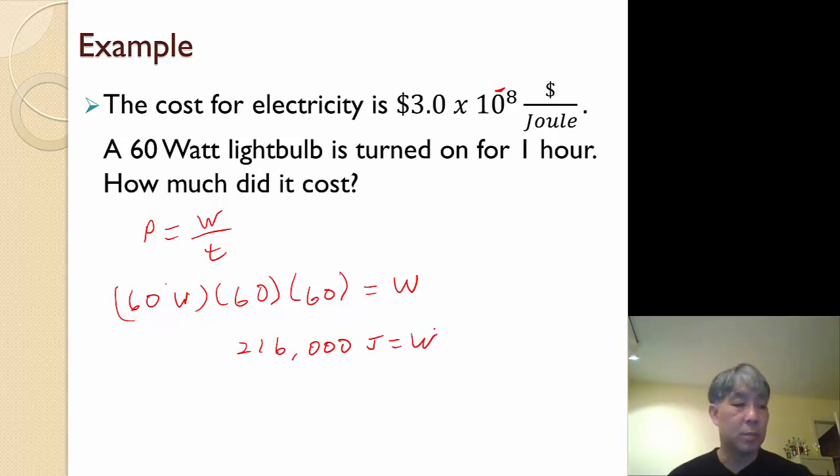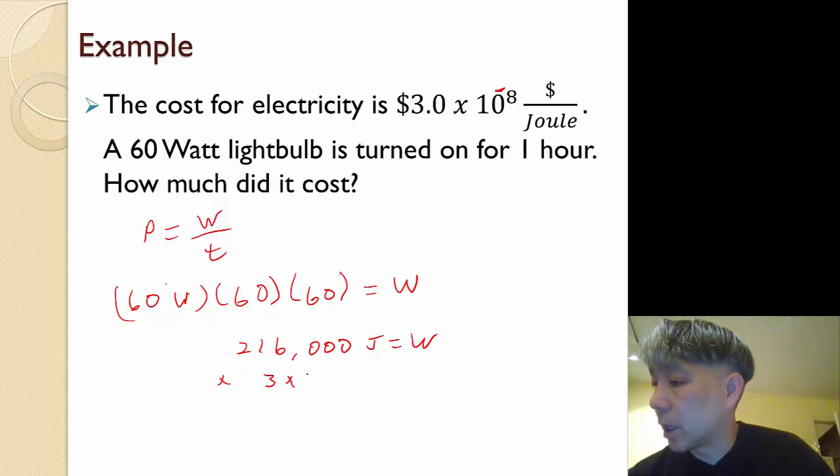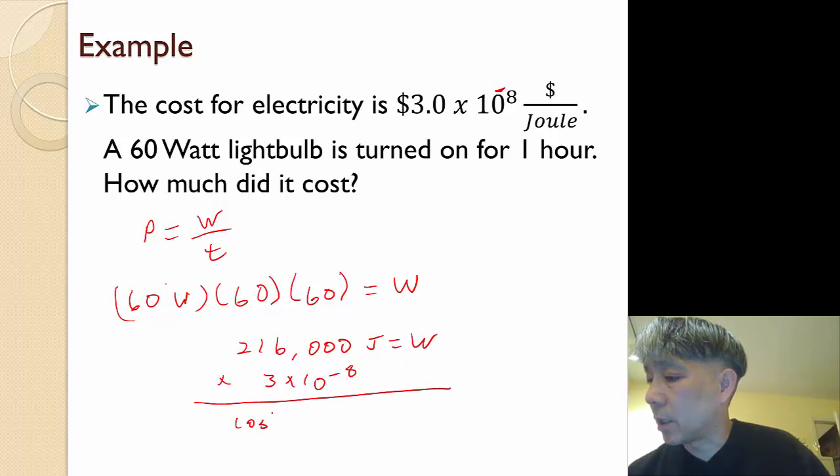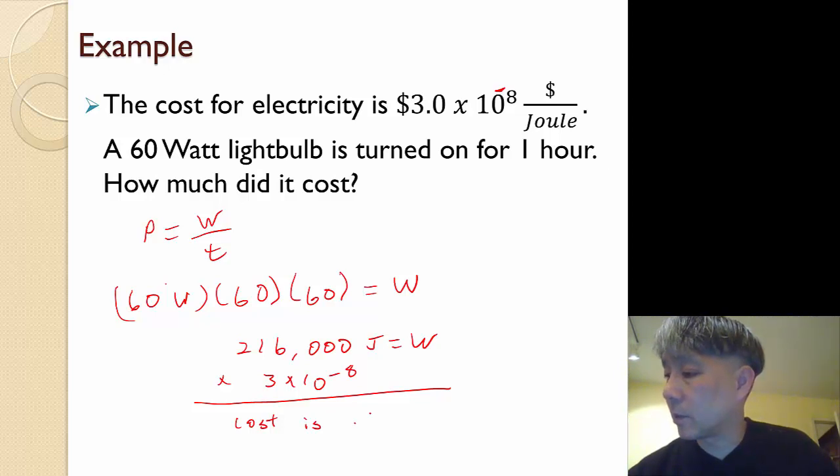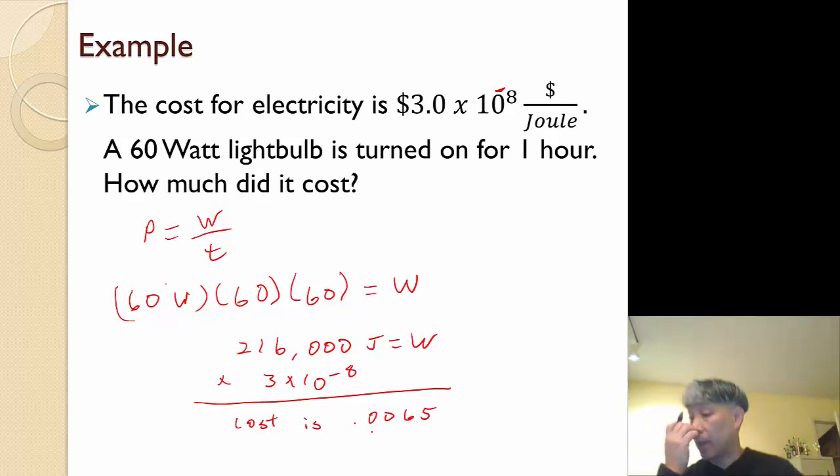And then I would multiply that by the cost per joule. So we multiply that by 3 times 10 to the minus 8 dollars per joule, and we find that the cost is .0065 cents, or .065 dollars. So basically running this light bulb for an hour cost us less than a penny.